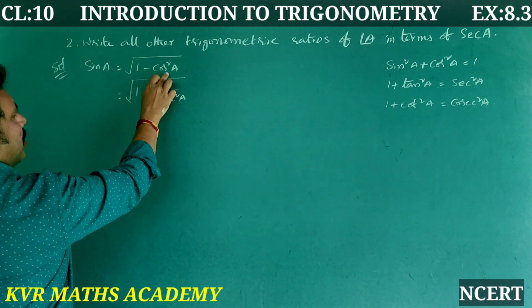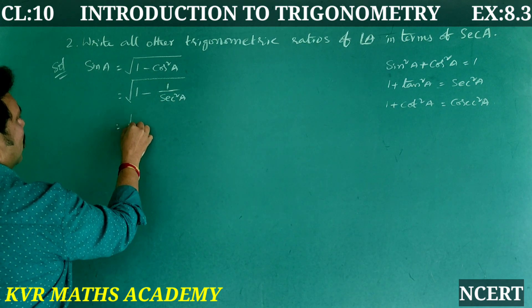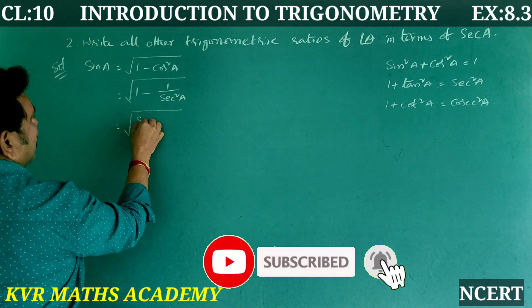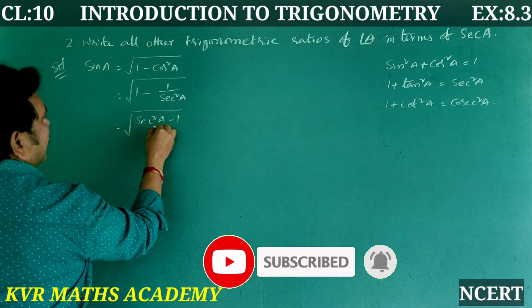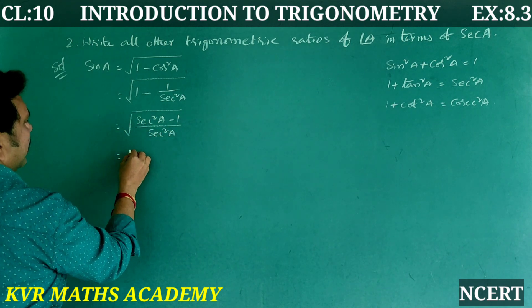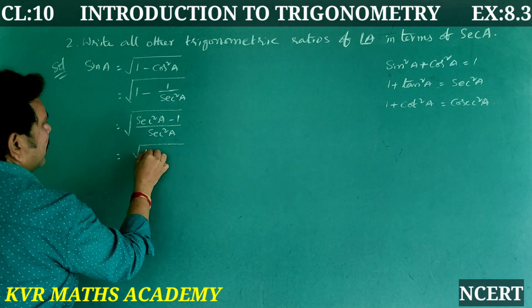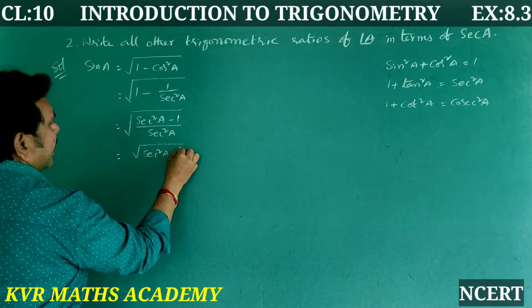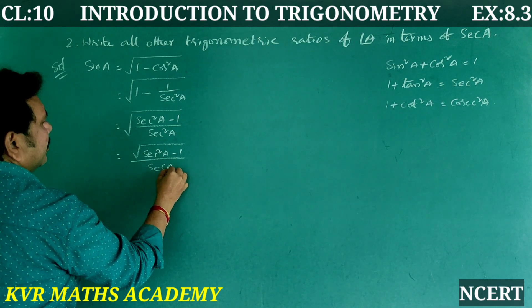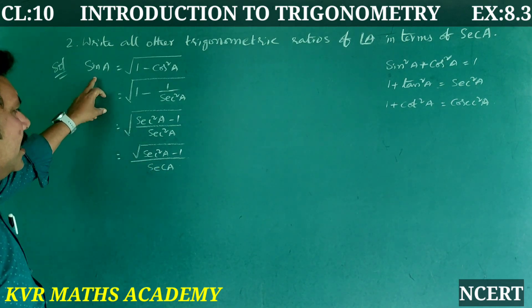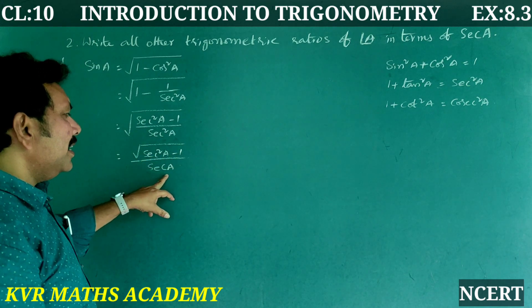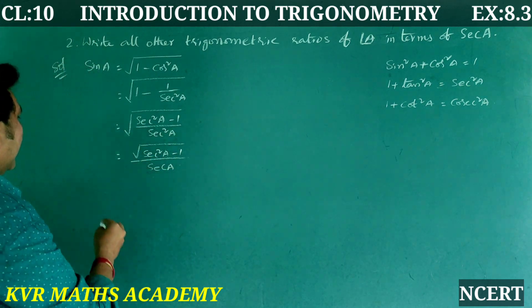Continuing sin A: √(1 − 1/sec²A) = √((sec²A − 1)/sec²A) = √(sec²A − 1) / sec A. Therefore, sin A in terms of sec A is √(sec²A − 1) / sec A.